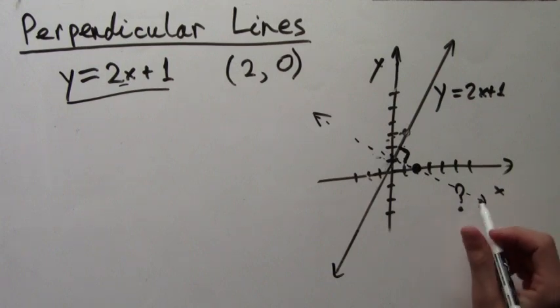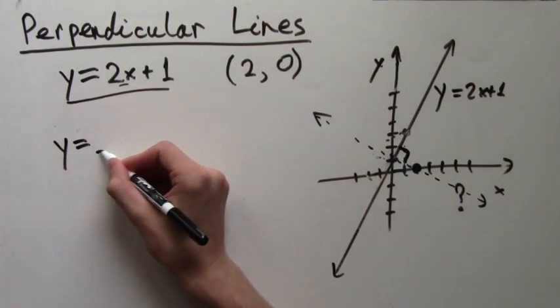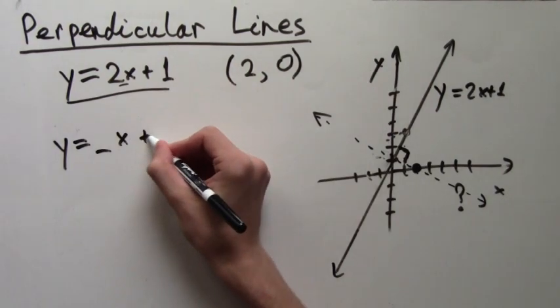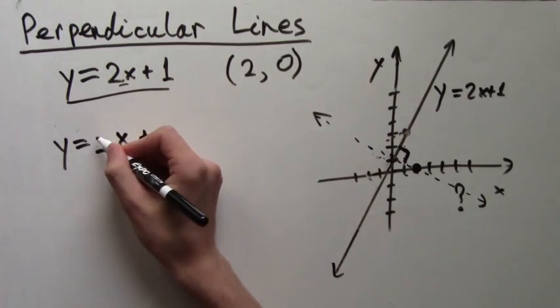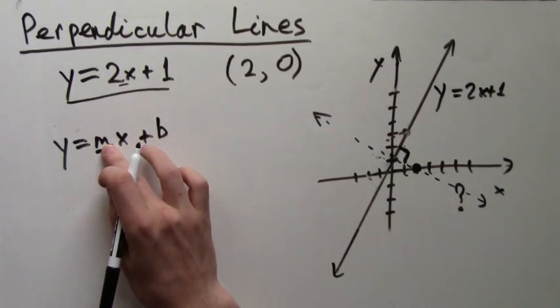So how do we do this? Well first of all, its formula is going to be y equals some number times x plus another number, which we usually write as y equals mx plus b for some constants.